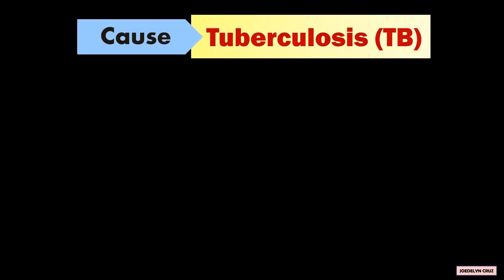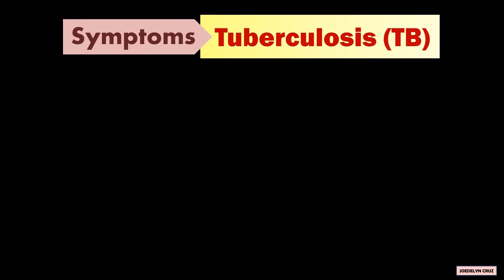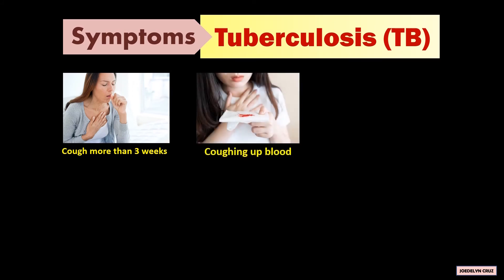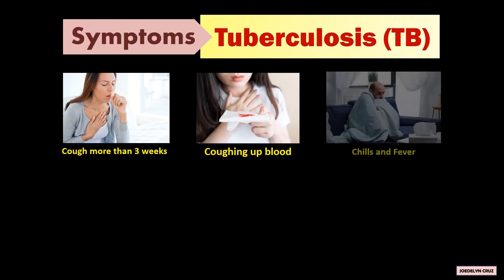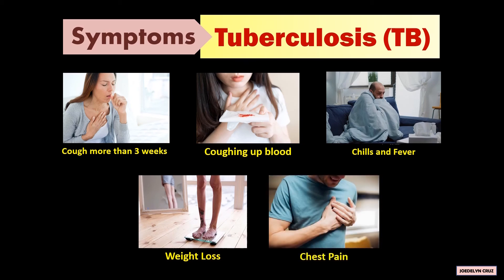Tuberculosis is caused by bacteria called Mycobacterium tuberculosis. The symptoms are a cough that lasts for more than three weeks, coughing of blood, chills and fever, weight loss, and chest pain.